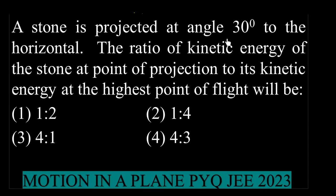A stone is projected at an angle of 30 degrees to the horizontal. The ratio of the kinetic energy of the stone at the point of projection to its kinetic energy at the highest point of flight will be?